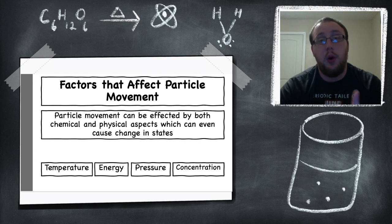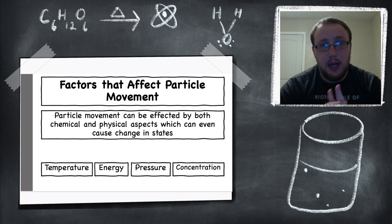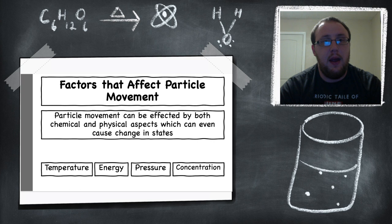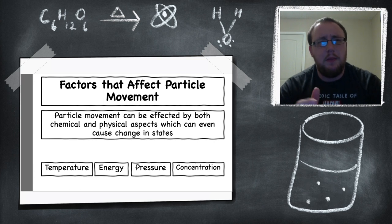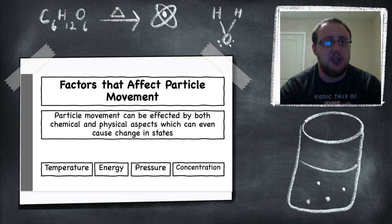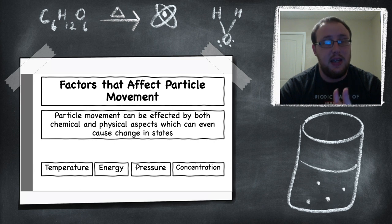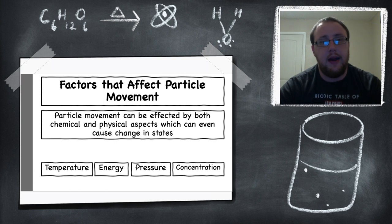So far in this lecture, we've talked about what particles are, what each state of matter looks like as far as particles, and the kinetic molecular theory. Now, for the last part of this lecture, we're going to talk about factors that affect particle movement — what's making these particles move and how we can change the particle movement within a substance. Particle movement can be affected by both chemical and physical aspects, which can even cause a change in state. The factors we'll go over today include temperature, energy, pressure, and concentration.